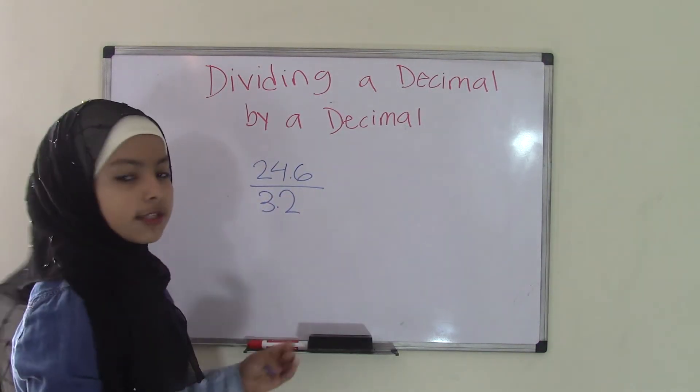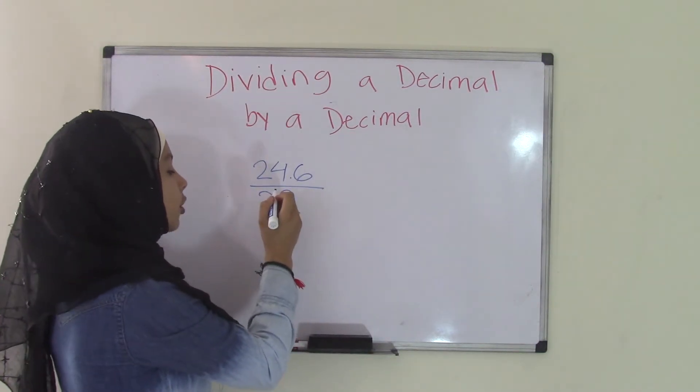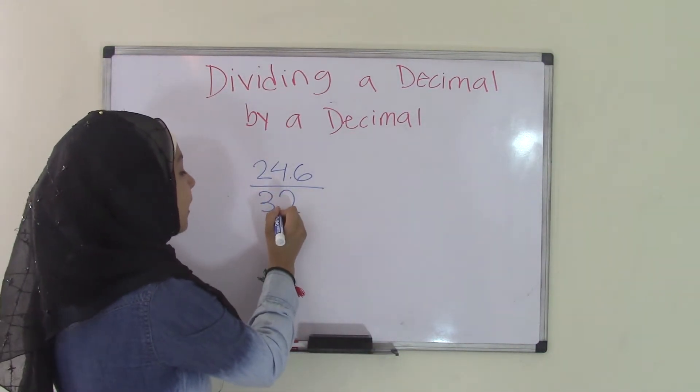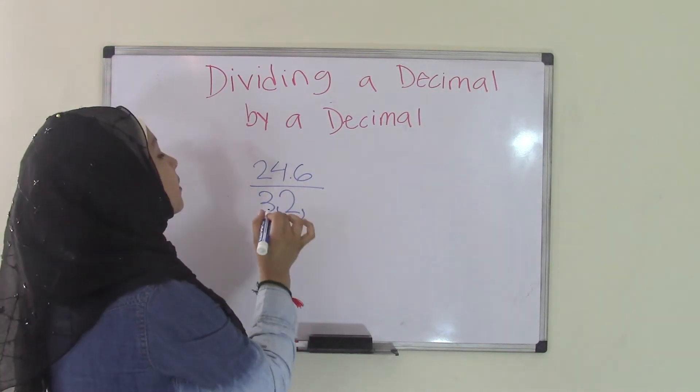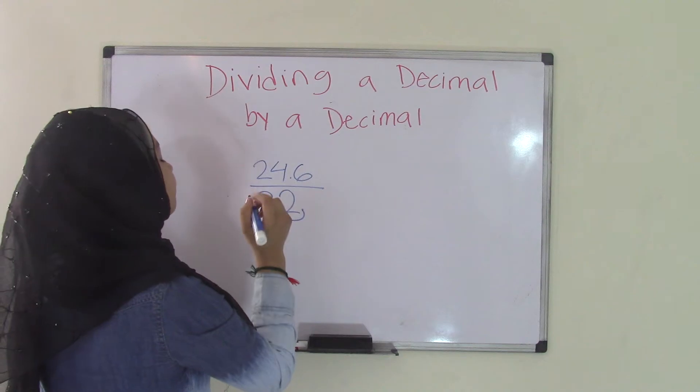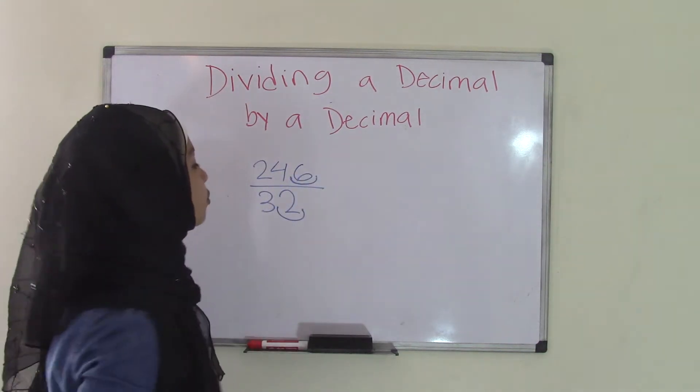Alright, 24.6 divided by 3.2. Once again, you have to make the divisor a whole number. So you take that and you move it one space from left to right to make it a 32. Do the same thing to 24.6, one space. So that becomes 246.